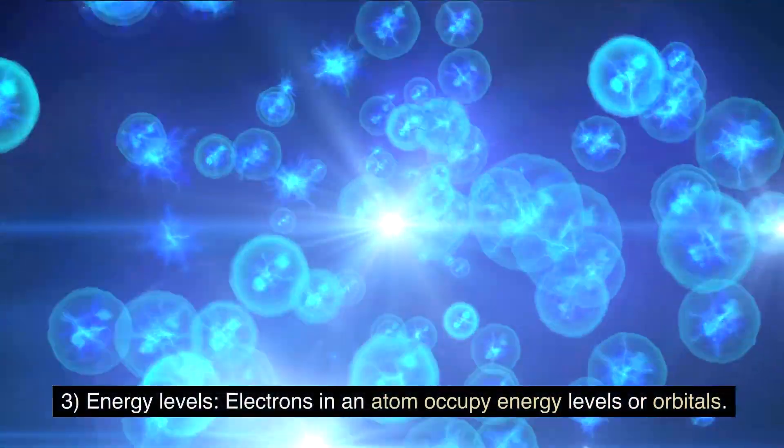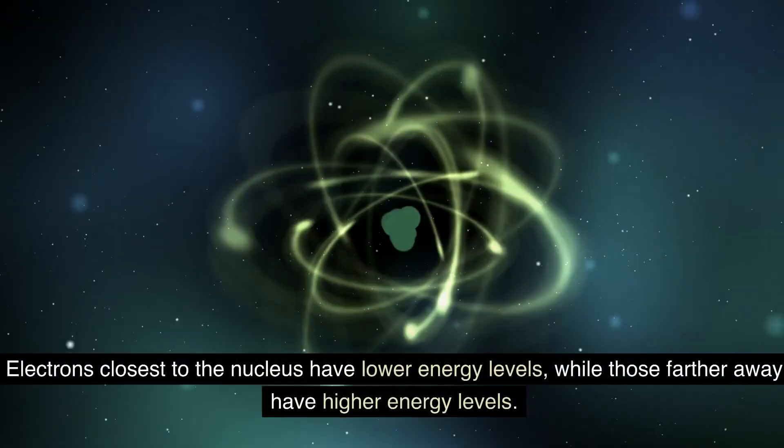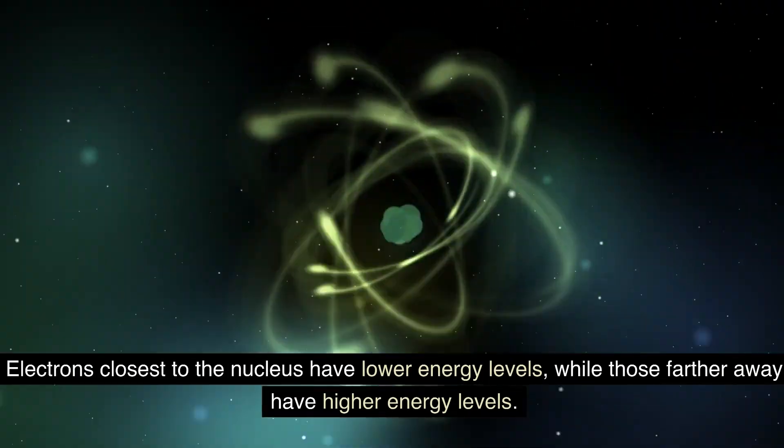Energy levels: electrons in an atom occupy energy levels or orbitals. Electrons closest to the nucleus have lower energy levels, while those farther away have higher energy levels.